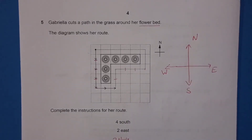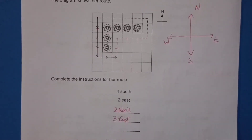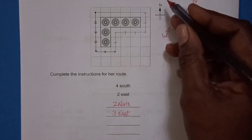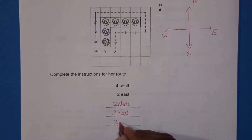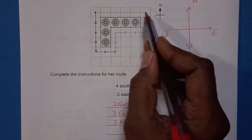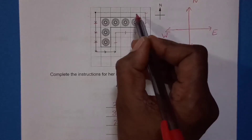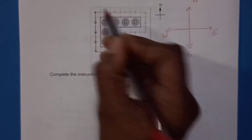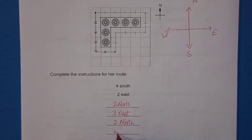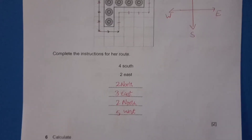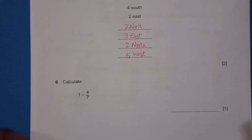Continuing the route: 3 squares east, then 2 squares north, then 5 squares west. That completes her route around the flower bed.